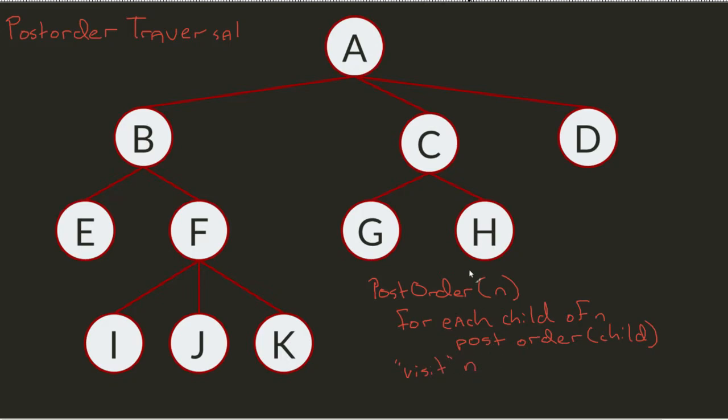So only after I've gone down as far as I can, can I move forward. In this case, for example, I start at A. Well, I can't immediately visit A. Instead, I have to say, for each child of A. For each child of A means I start at B.